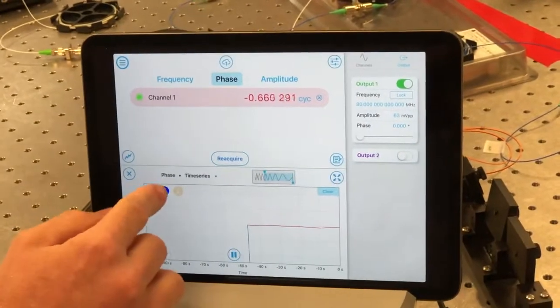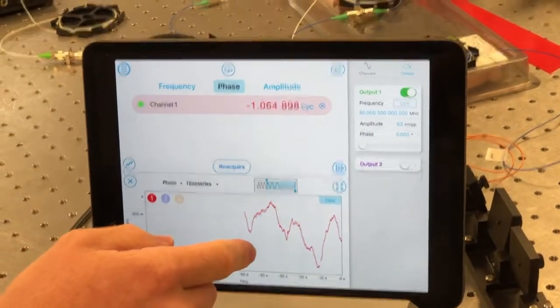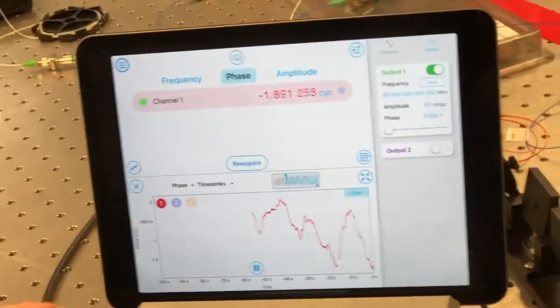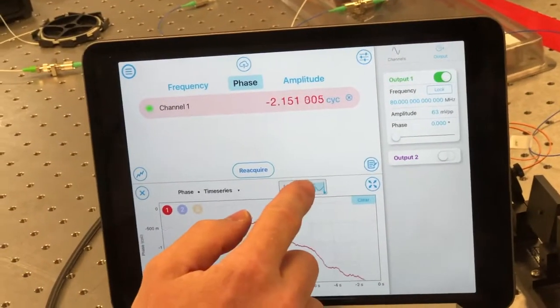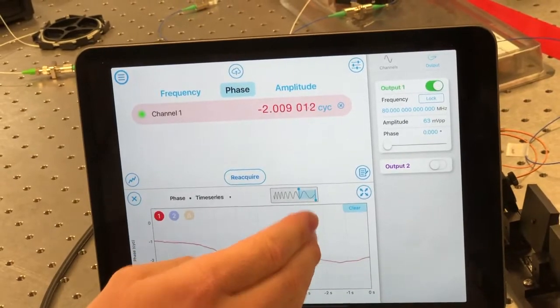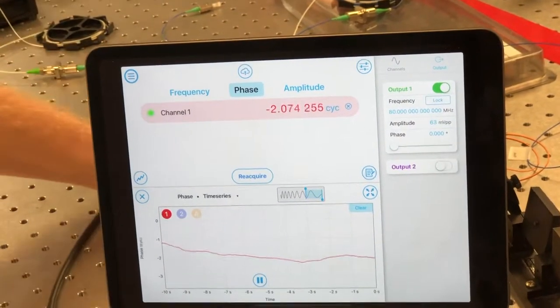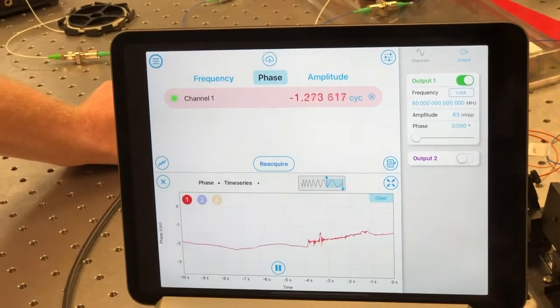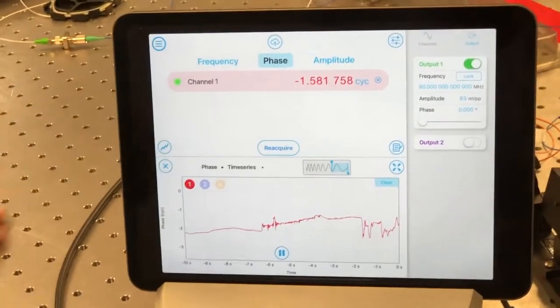So to show that, what I'll do is I'll look at the phase of the 80 megahertz beat note, and to illustrate what I'm talking about, I'll zoom in a little bit. And then I'm going to tap one of the fibers, and you can see that as I tap it, it's now moving around a lot, like this.